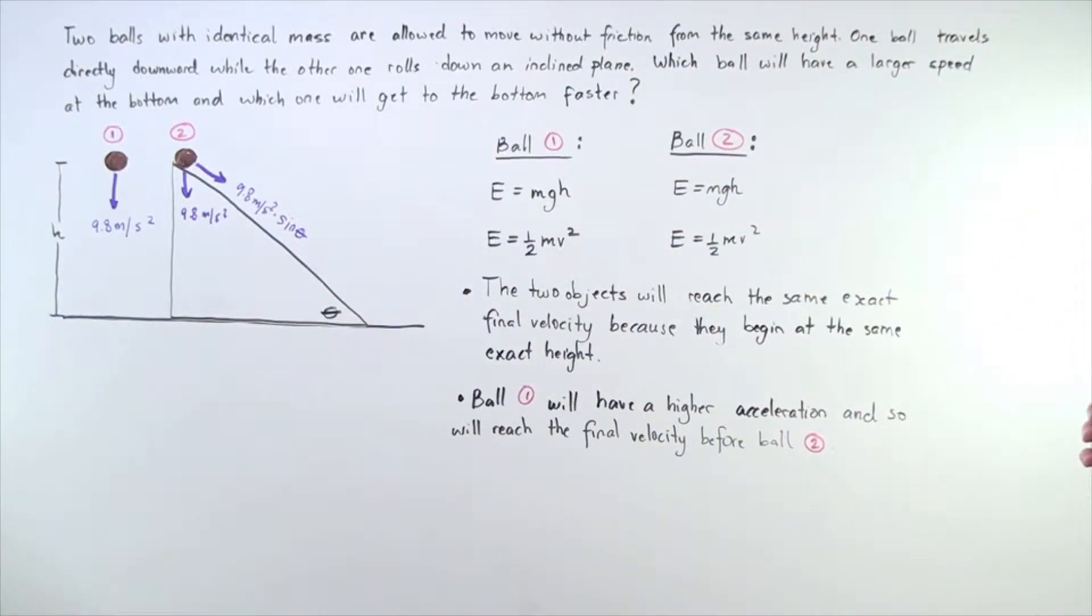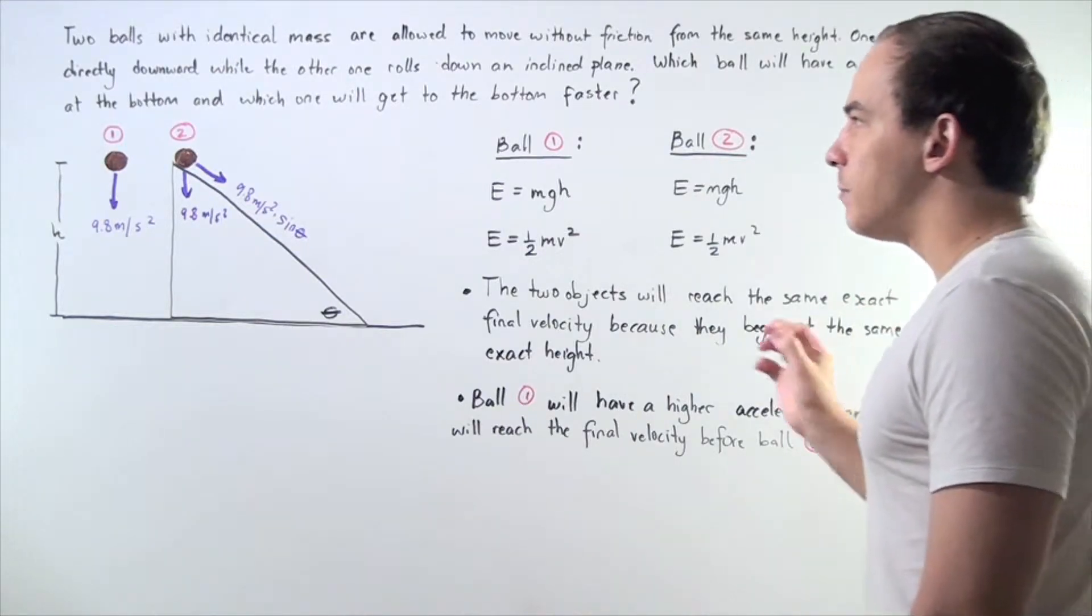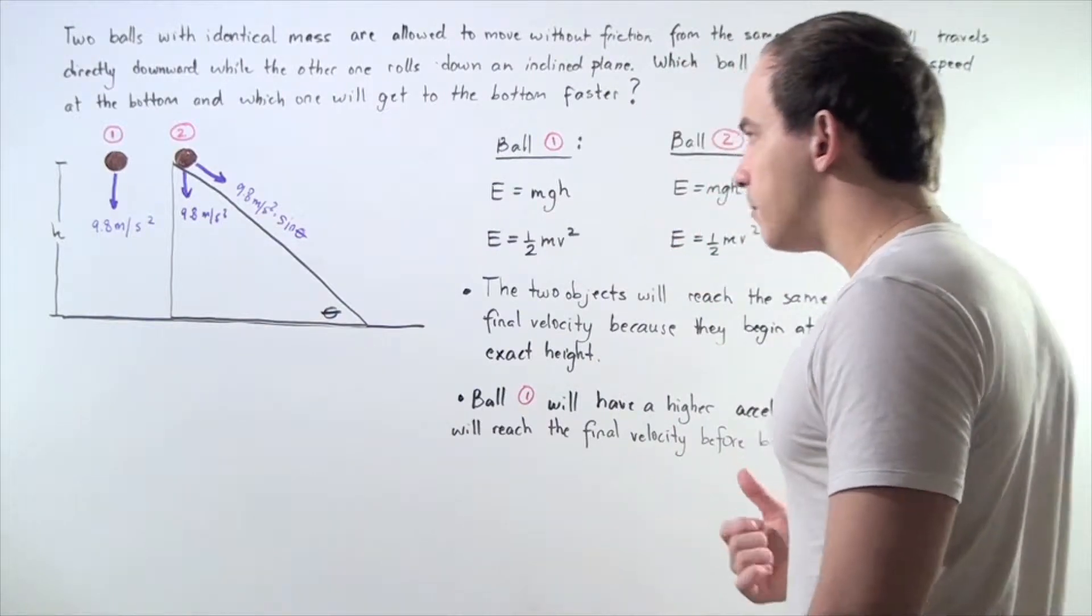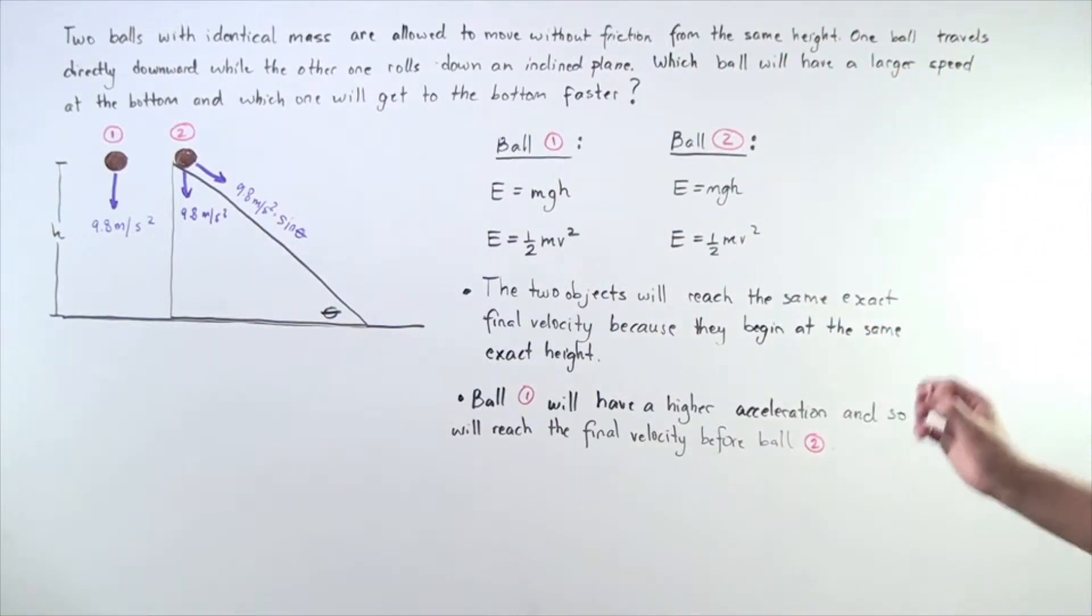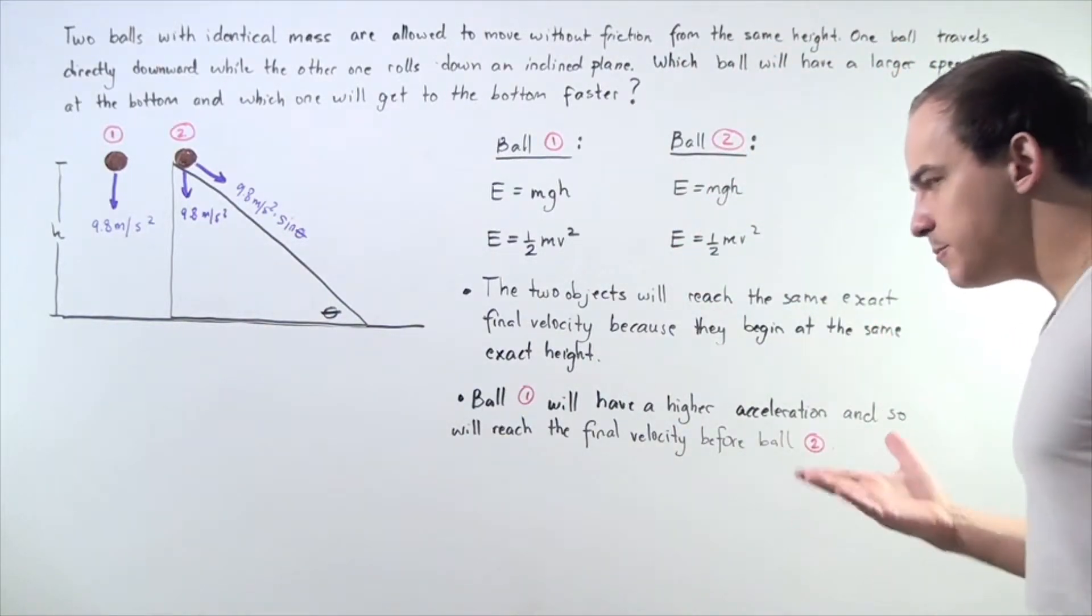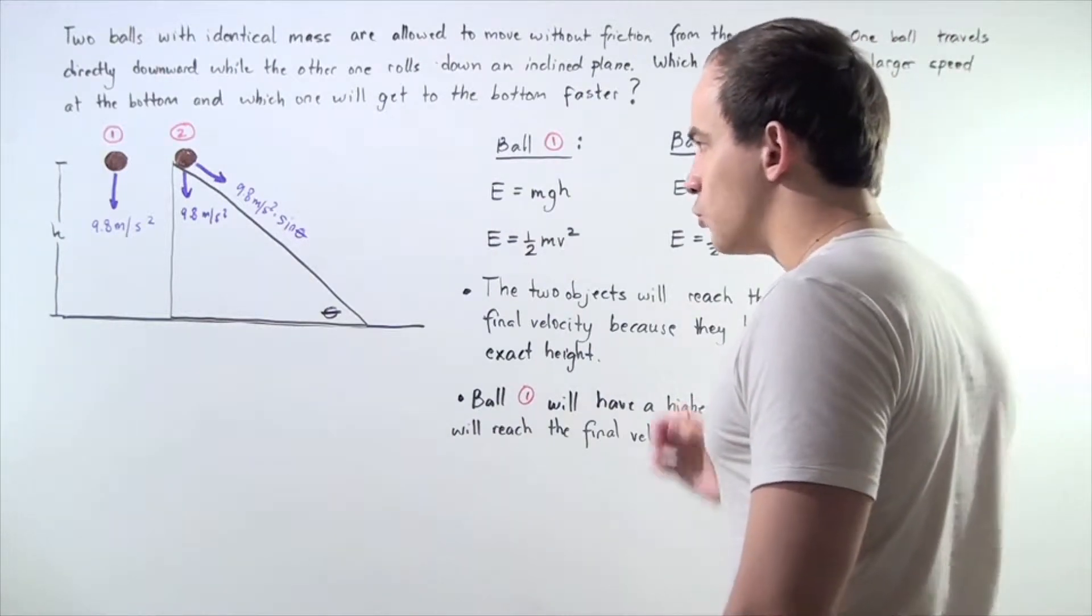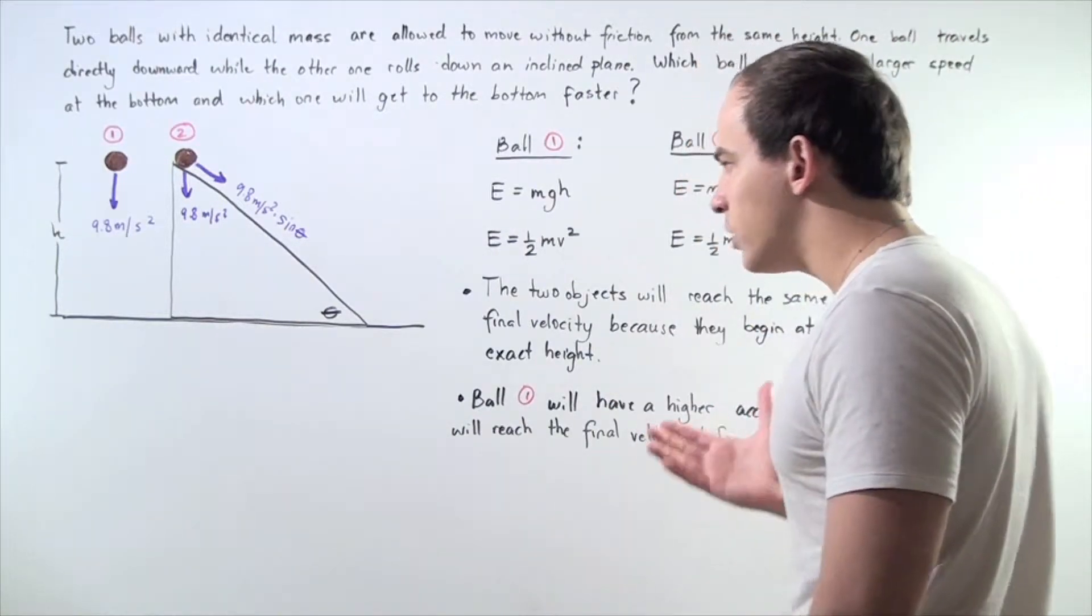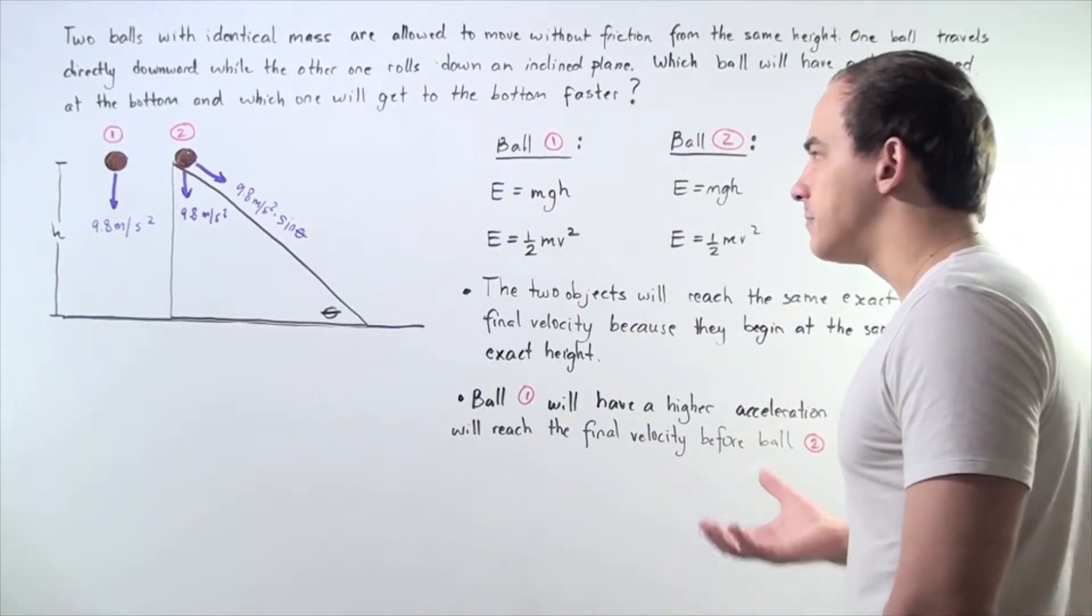Now, we want to answer these two questions. Which ball will have a larger velocity at the bottom, a larger speed at the bottom, and which one will get to the bottom first? Well, let's begin with the first question. Which object, which ball will have a larger speed at the bottom?